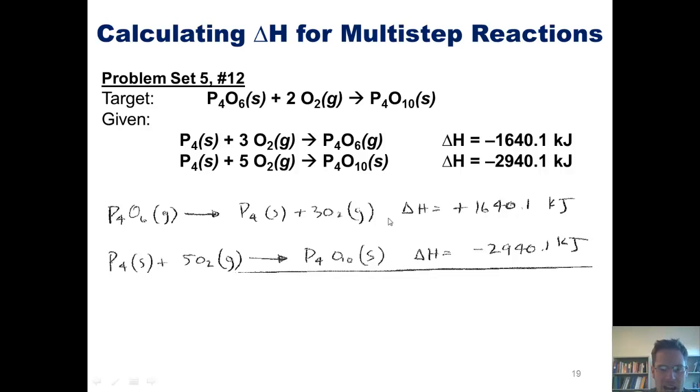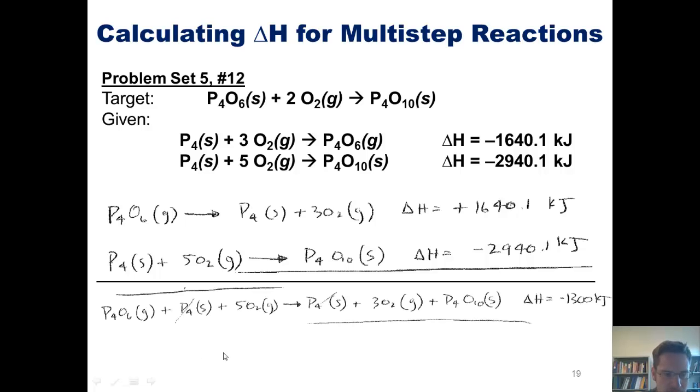You'll note that if I add these two things together they end up giving me this big long equation here. I've got the P4O6 on the left side being added with the P4 on the left side and the 5O2 on the left side. That ends up giving me an overall huge left side shown here. And on the right side of my equation I have P4 plus 3O2 plus P4O10 forming a big final right side shown here. You'll note that the P4 solid on the left side of the equation and on the right side of the equation cancel each other out.